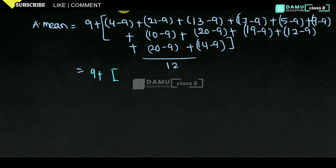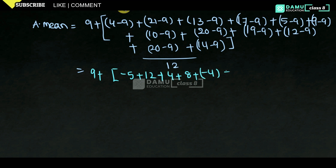So: 4 minus 9 is minus 5; 21 minus 9 is 12; 13 minus 9 is 4; 17 minus 9 is 8; 5 minus 9 is minus 4; 9 minus 9 is 0; 10 minus 9 is 1; 20 minus 9 is 11; 19 minus 9 is 10; 12 minus 9 is 3; 20 minus 9 is 11; 14 minus 9 is 5.